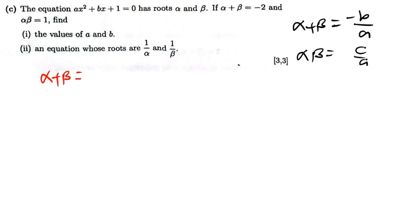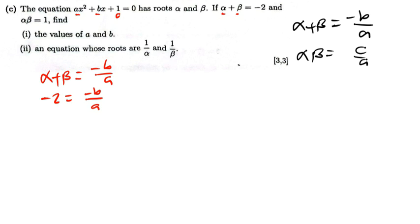Alpha plus beta equals negative b over a. We've been told that alpha plus beta is negative 2, so negative 2 equals negative b over a. Now for alpha times beta equals c over a — in our equation ax² + bx + 1 = 0, c is 1. So alpha times beta equals 1 divided by a, and since alpha times beta equals 1, cross-multiplying gives a equals 1.